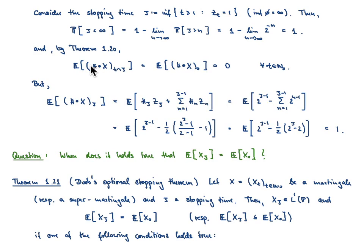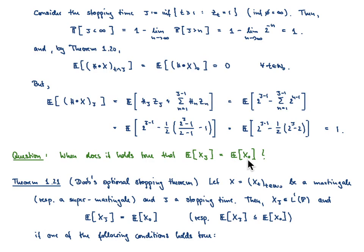This is interesting: the expectation of the stopped process at any fixed time t is 0, whereas at the stopping time τ it equals 1. Since τ is finite P-almost surely, as t → ∞, the process X_{t∧τ} converges to X_τ. This simply means we cannot interchange the limit and the expectation in this particular example, bringing us to the question of sufficient conditions.